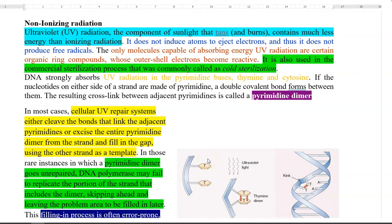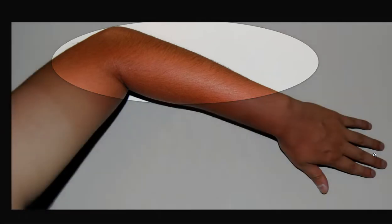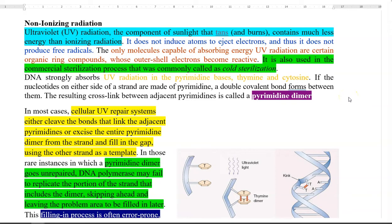Now we look at non-ionizing radiation. Non-ionizing radiation is mainly composed of ultraviolet radiation, the component of sunlight that causes tanning. The color variation can be seen between skin exposed to sunlight and skin that has been covered. This non-ionizing radiation contains less energy than ionizing radiation, so it does not cause ionization of atoms, ejection of electrons, or free radical formation — those effects are caused by ionizing radiation.